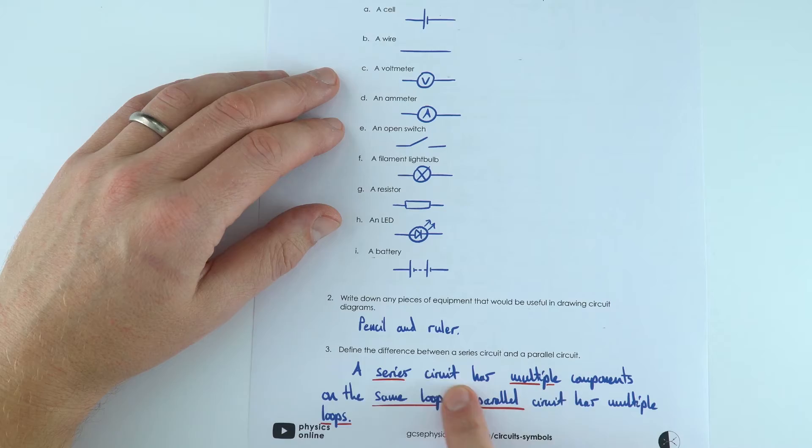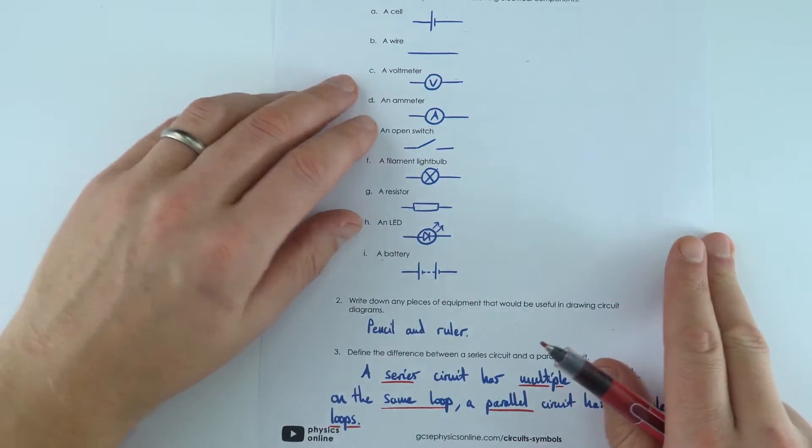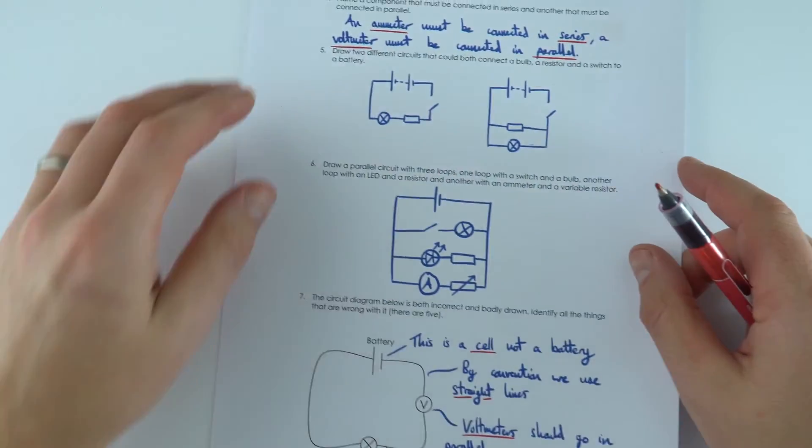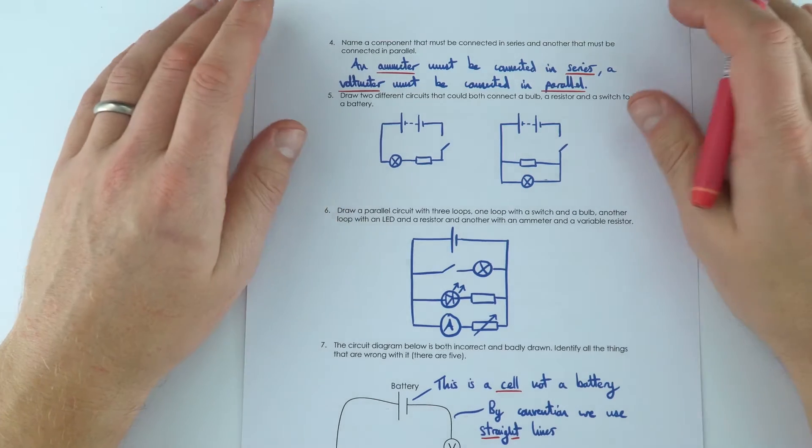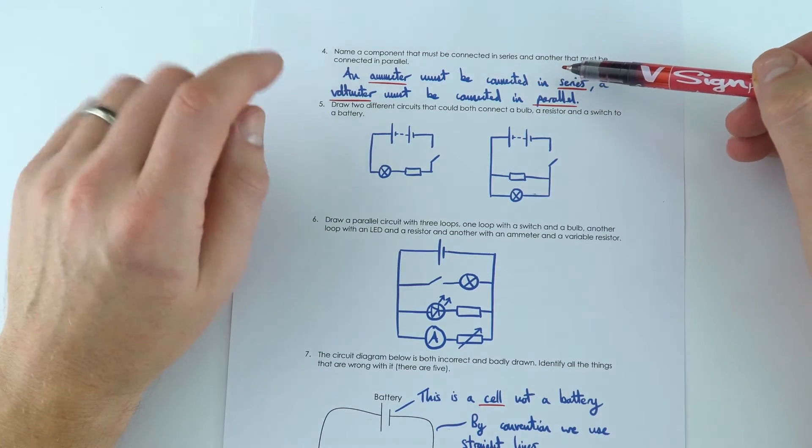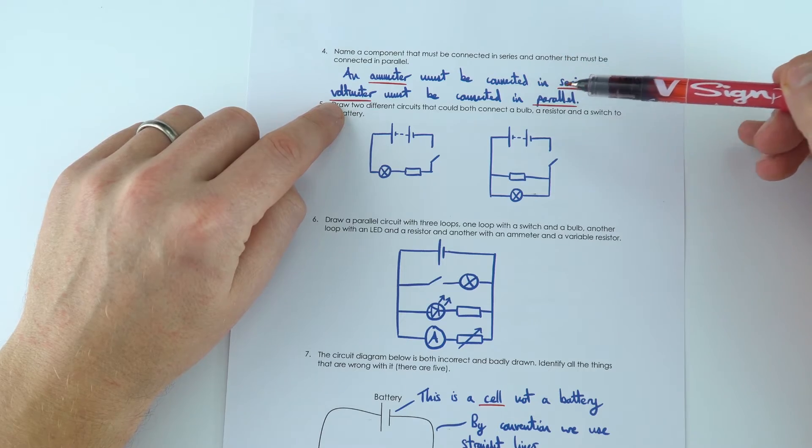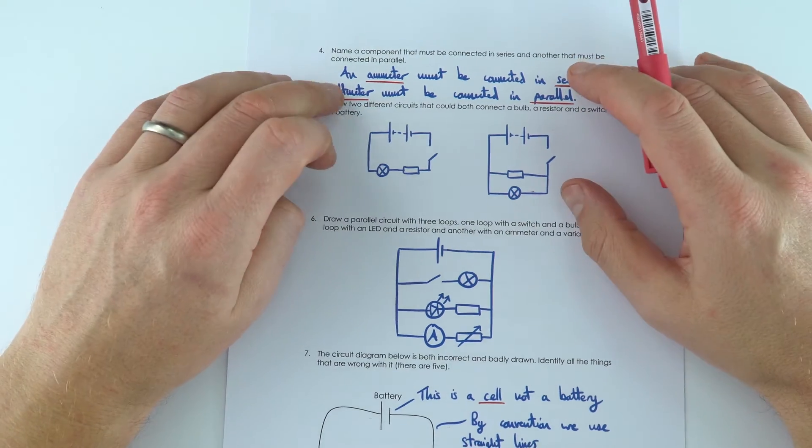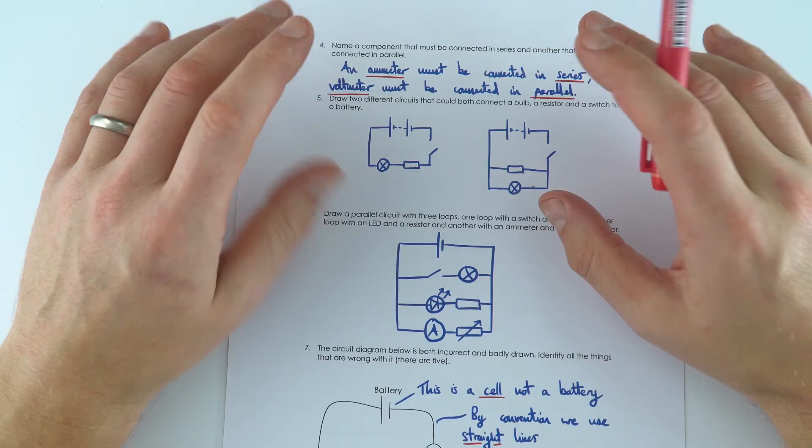So we've got a bit about the difference between series and parallel circuits and there's loads more questions coming up about that. The important thing to remember is that an ammeter is always connected in series but a voltmeter must be connected in parallel and that's going to become quite apparent as we do more questions on these worksheets.